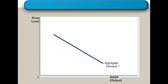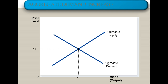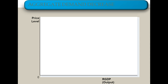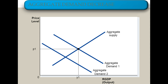We have a downward sloping aggregate demand curve and an upward sloping short run aggregate supply curve, and we mark the current price with P-sub-1 and the current RGDP with Y-sub-1. When aggregate demand increases, price and RGDP both increase — inflation increases and unemployment decreases. When aggregate demand decreases, prices and RGDP both decrease — inflation decreases and unemployment increases. This is all review from our last module.